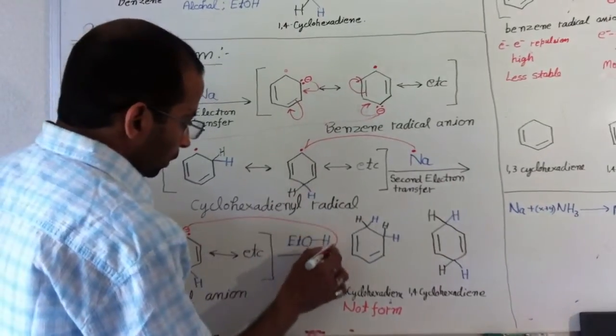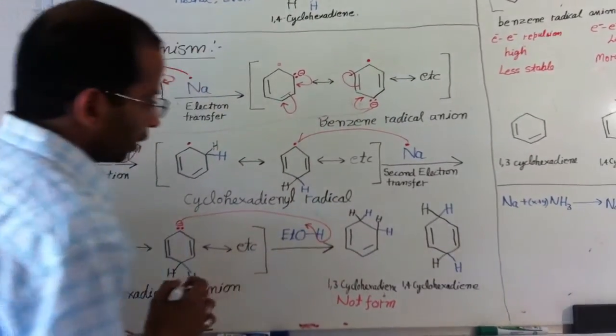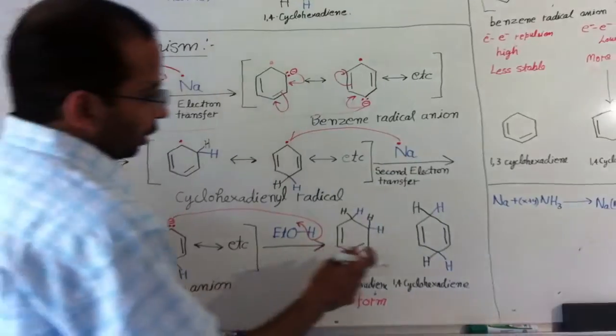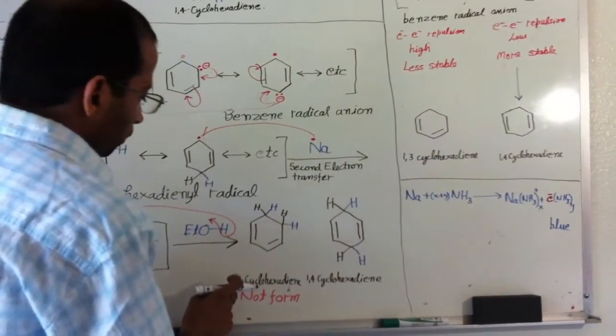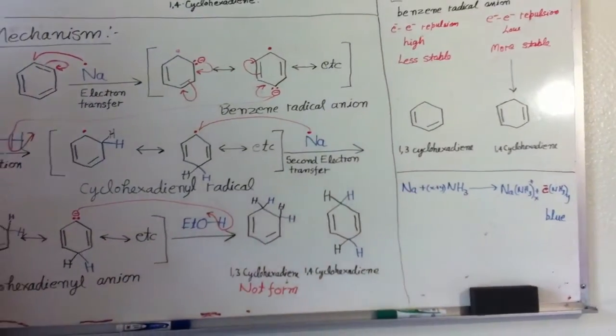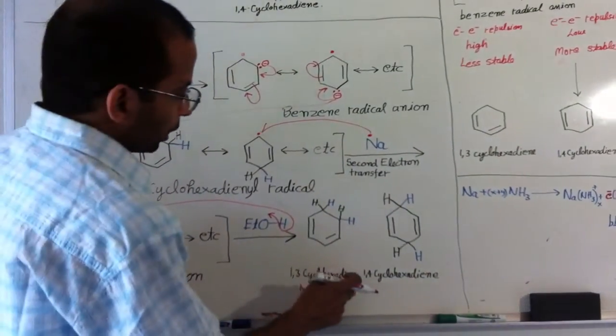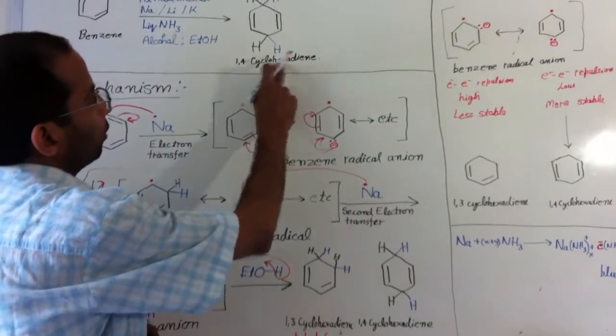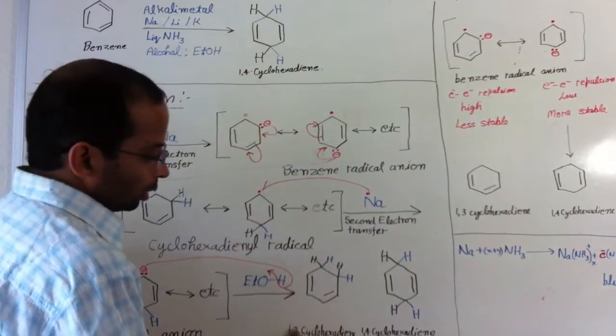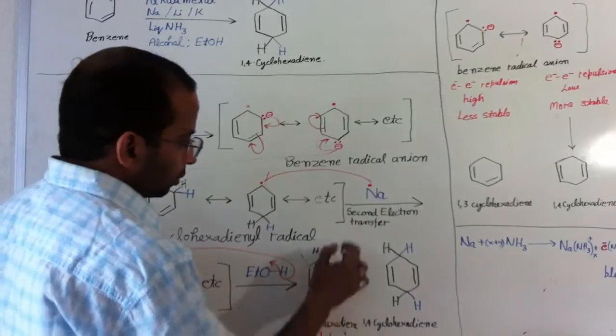Once it goes to these structures, it forms radical anions. Now they are ready to absorb another proton from ethanol. Once they absorb another proton from ethanol, it forms 1,4-cyclohexadiene. If this structure absorbs a proton, it will form 1,3-cyclohexadiene. But in this reaction, the only product formed is 1,4-cyclohexadiene and not 1,3-cyclohexadiene.